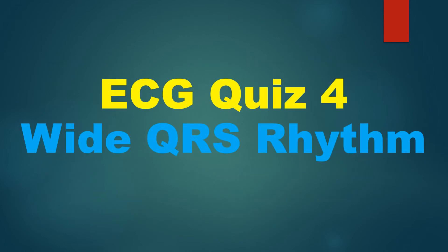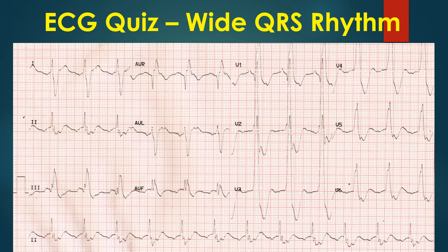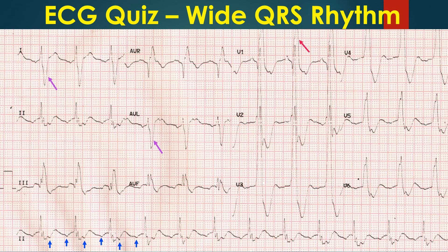ECG quiz on a wide QRS rhythm. Here is an ECG showing a wide QRS rhythm — what are the findings and interpretations? P-waves can be seen at a rate double that of QRS complexes, marked by blue arrows in the rhythm strip. They are inverted in inferior leads, indicating an ectopic focus from the low atrium, suggesting an ectopic atrial tachycardia.